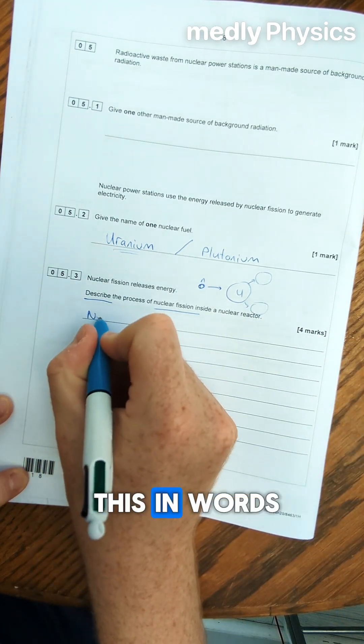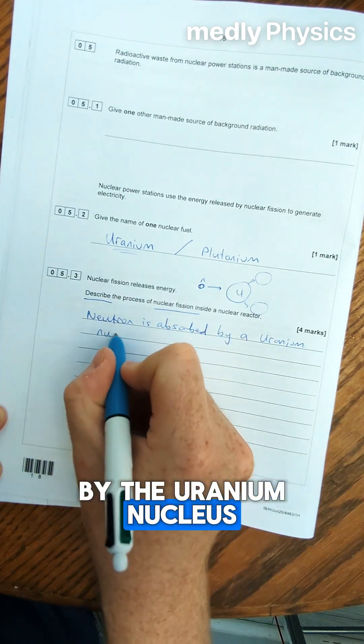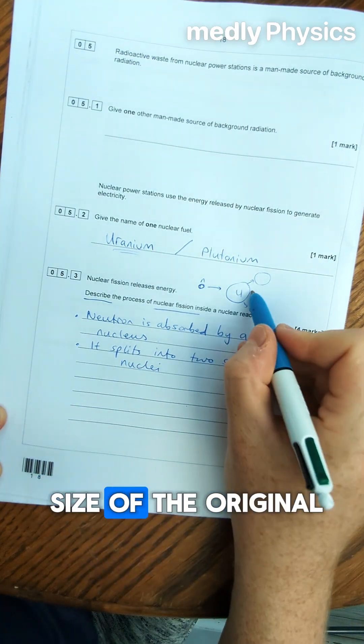If we were to describe this in words it's not just that the neutron hits the nucleus. The neutron is absorbed by the uranium nucleus. It then splits into two smaller nuclei roughly about half the size of the original.